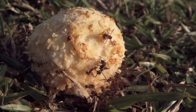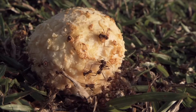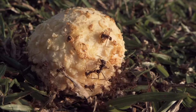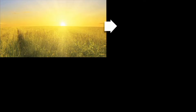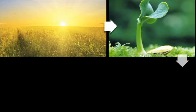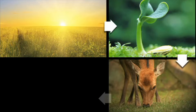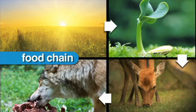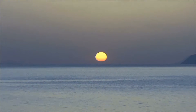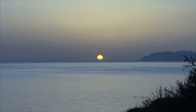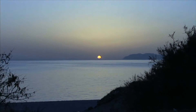Decomposers, like all living things, get energy from food. To better understand how living things get energy, we use a food chain. A food chain shows the relationship between the plants and animals in an ecosystem. All food begins with the sun. The sun provides energy for everything on our planet.